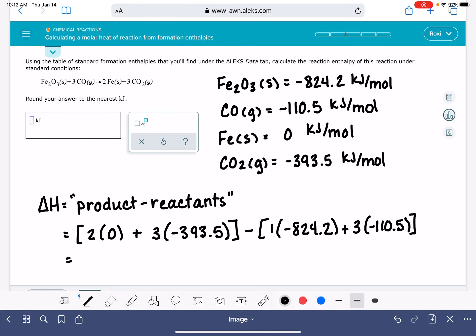So now we're just going to do the math on this. We've got to be really careful with the signs. 3 times negative 393.5 is negative 1180.5. So there's our product delta H altogether. And then from that, I'm subtracting negative 824.2 plus 3 times negative 110.5. That's negative 1185.7.